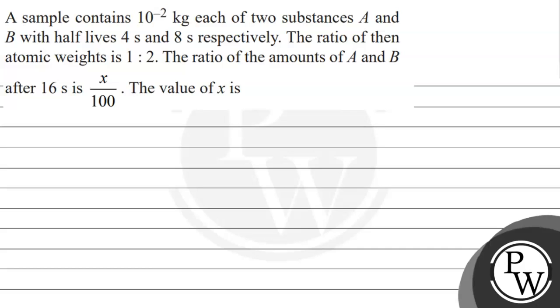Hello, let's read this question. The question says that a sample contains 10 raised to the power minus 2 kg each of two substances A and B with half lives 4 seconds and 8 seconds respectively. The ratio of the atomic weights is 1 is to 2. The ratio of the amounts of A and B after 16 seconds is x upon 100. The value of x is.